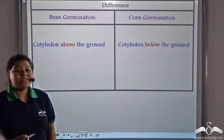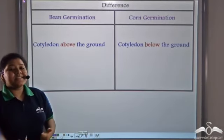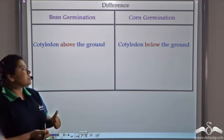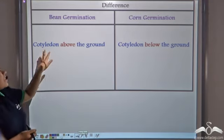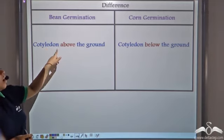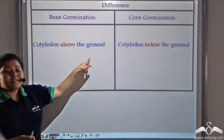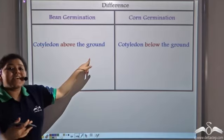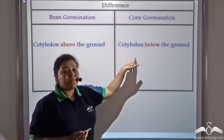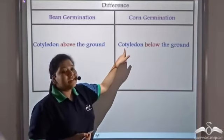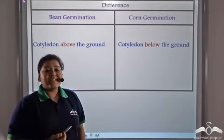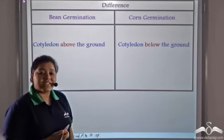So this is one difference between bean germination and corn germination. In case of bean germination, the cotyledon remains above the ground — that is epigeal germination — and in case of corn germination, the cotyledon remains below the ground, that is hypogeal germination.